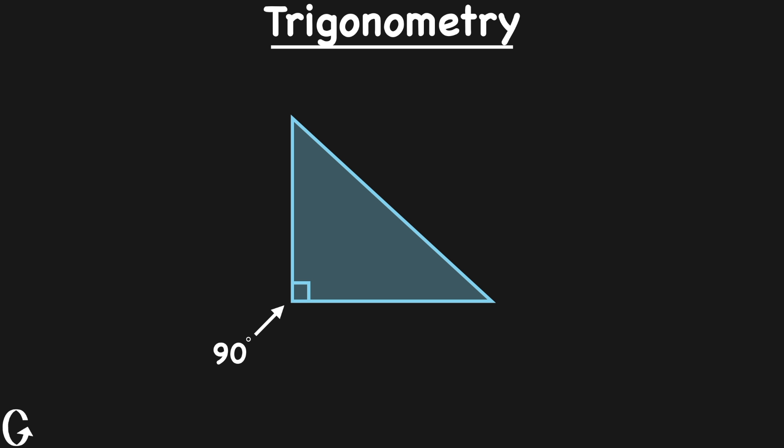There are three important terms associated with every right triangle: hypotenuse, opposite, and adjacent. The hypotenuse is always the side across from the right angle. So let's put that term here.